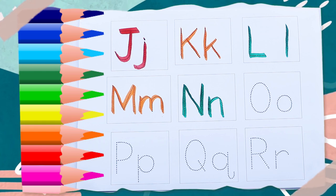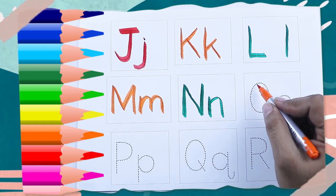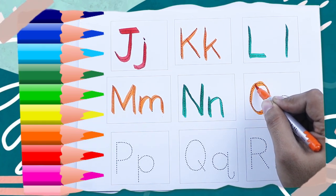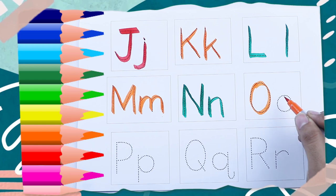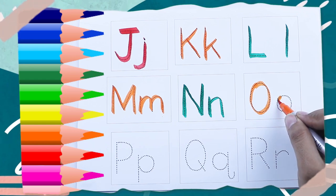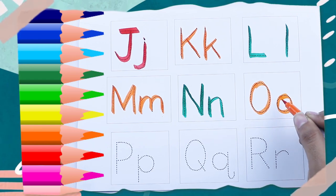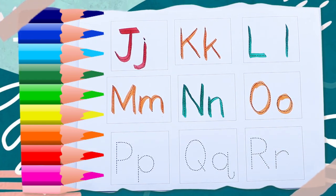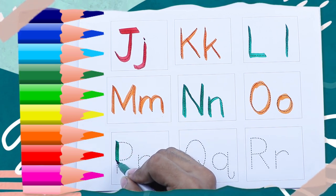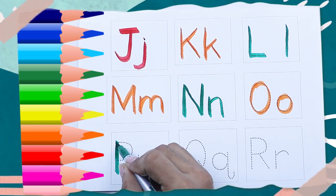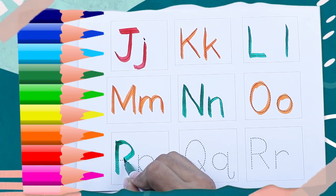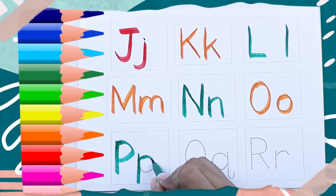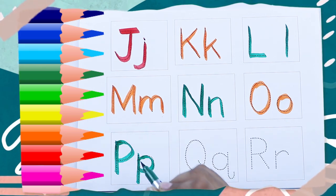Orange color capital O, O for orange. Orange color small o, o for orange. Green color capital P, P for parrot. Green color small p, p for parrot.